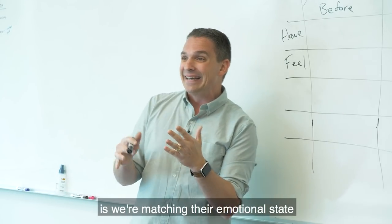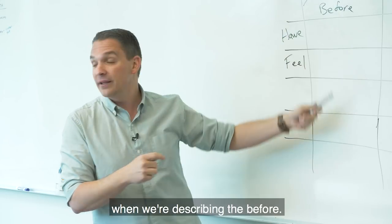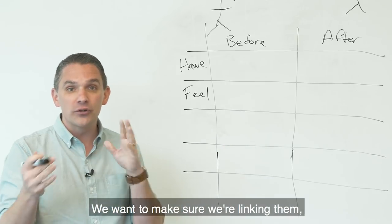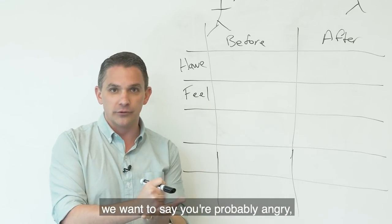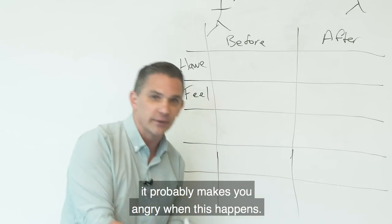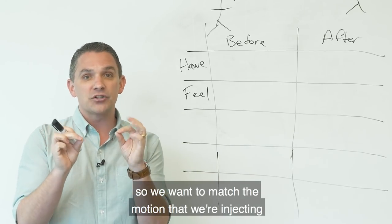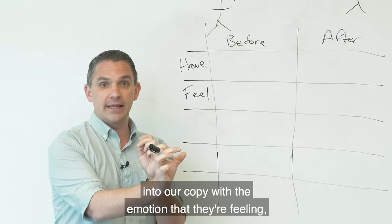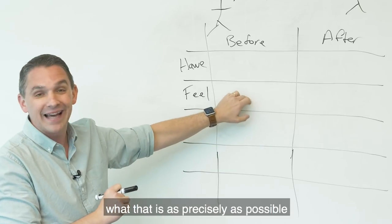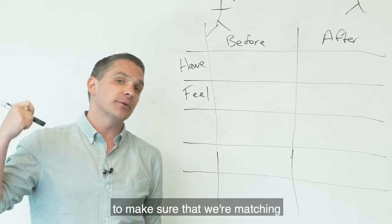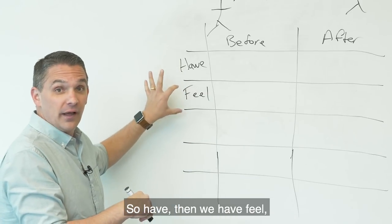What we want to make sure that we're doing is we're matching their emotional state when we're describing the before. We want to make sure that we're linking them. So if in the before state, if they're angry, we want to say, you're probably angry. It probably makes you angry when this happens. If they're frustrated, then you want to speak more in terms of the frustration. So we want to match the emotion that we're injecting into our copy with the emotion that they're feeling. So we need to make sure that we know what that is as precisely as possible to make sure that we're matching it as precisely as possible. So have, then we have feel.